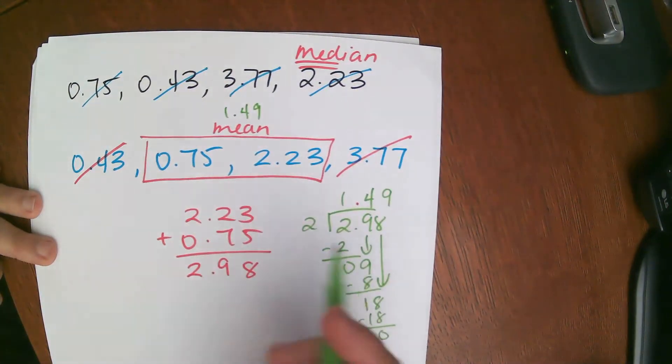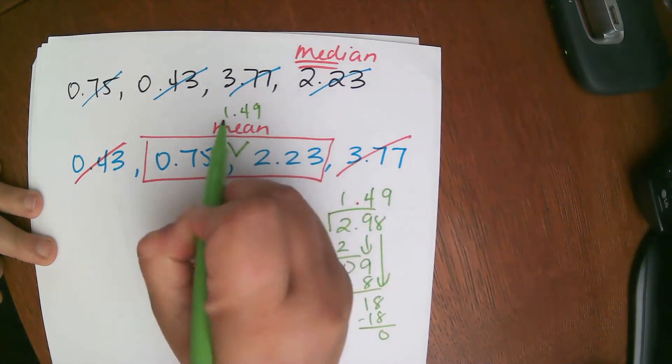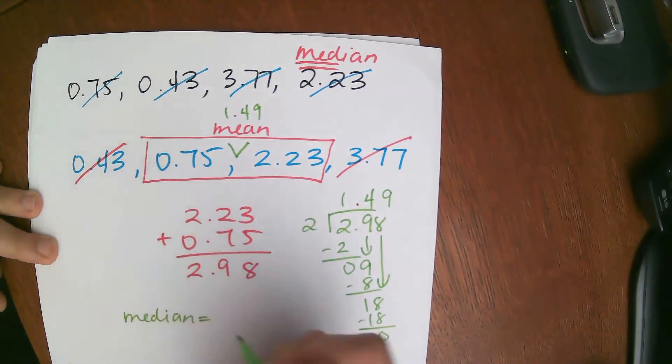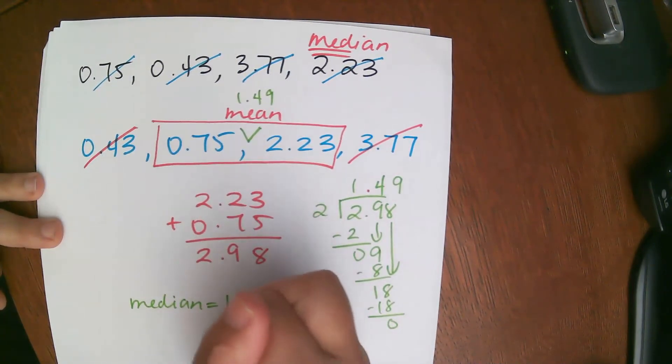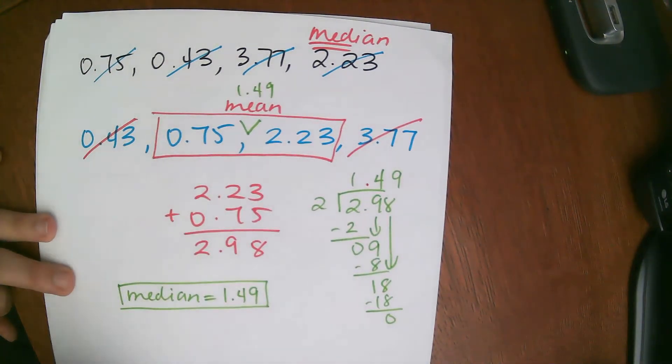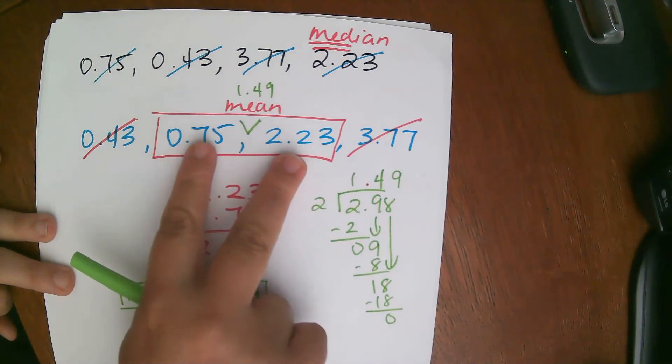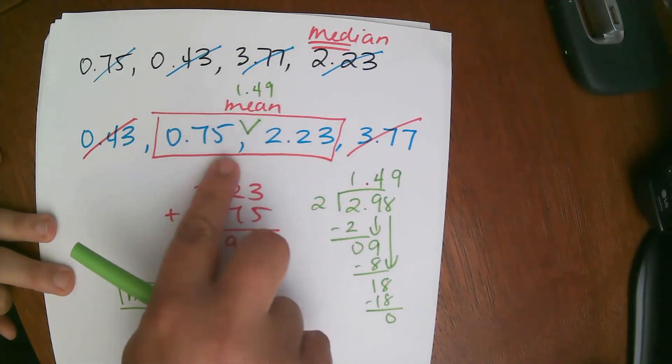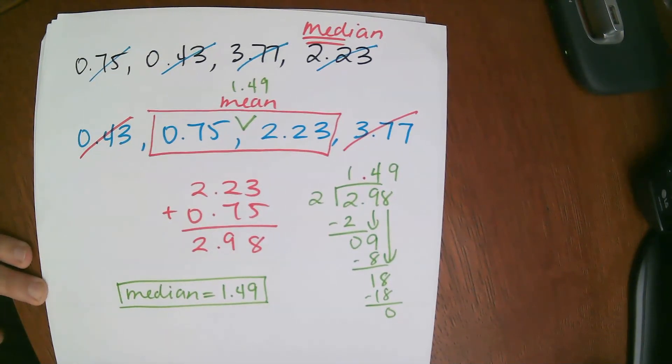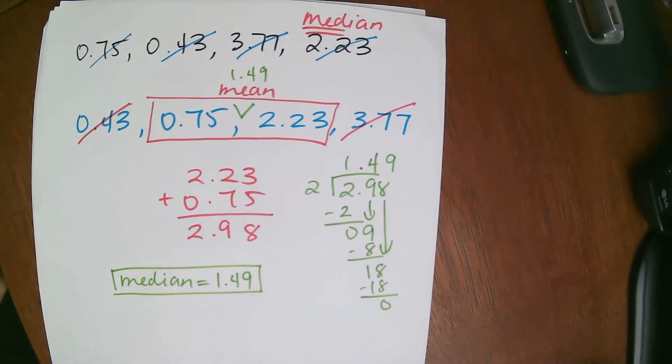So my mean for these two guys is 1.49. So my median, or my number right in the middle, is 1 and 49 hundredths. So it's your number in the middle. If you have 2 in the middle, you have to find the mean of the 2. If you have 1 in the middle, your life is easy. You just pick it. So hopefully you get 1 in the middle, but it's not always the case.